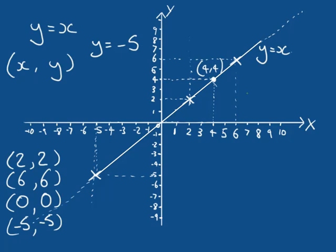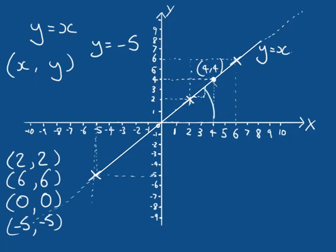This straight line has some interesting properties. It goes through the origin because if X equals zero, Y equals zero. And as mentioned, if we move one unit in X, we move up one unit in Y. As long as our scales in X and Y are the same, the angle between the X axis and our line is 45 degrees.